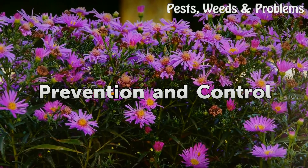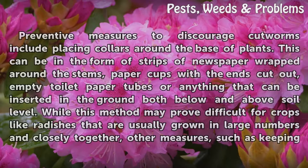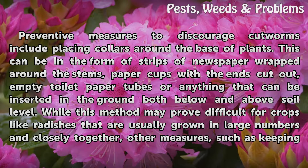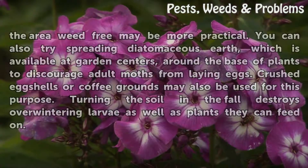Prevention and control: preventive measures to discourage cutworms include placing collars around the base of plants. This can be in the form of strips of newspaper wrapped around the stems, paper cups with the ends cut out, empty toilet paper tubes, or anything that can be inserted in the ground both below and above soil level. While this method may prove difficult for crops like radishes that are usually grown in large numbers and closely together, other measures such as keeping the area weed-free may be more practical.